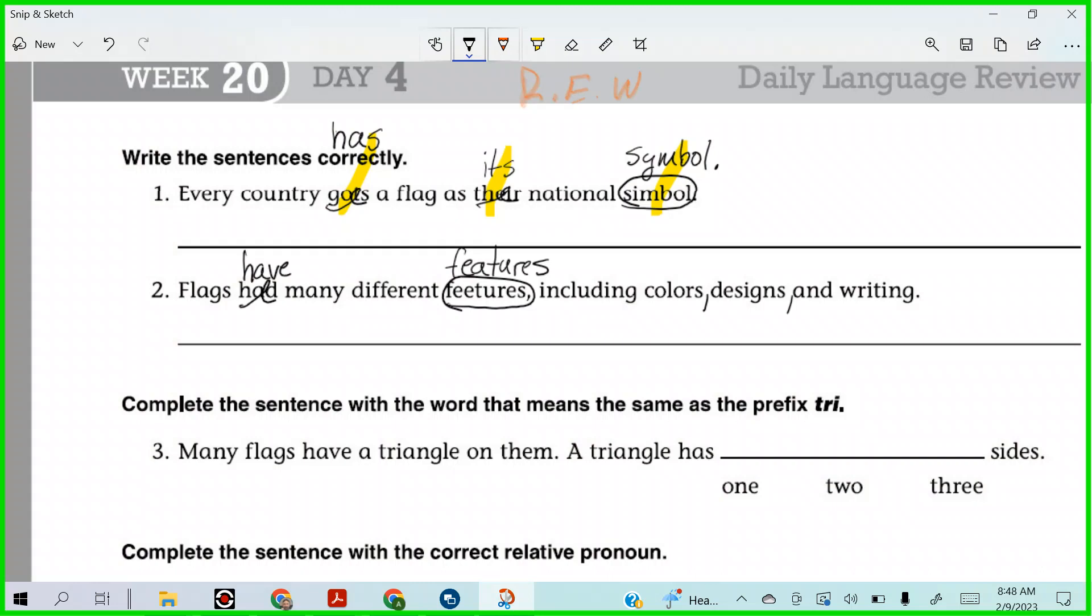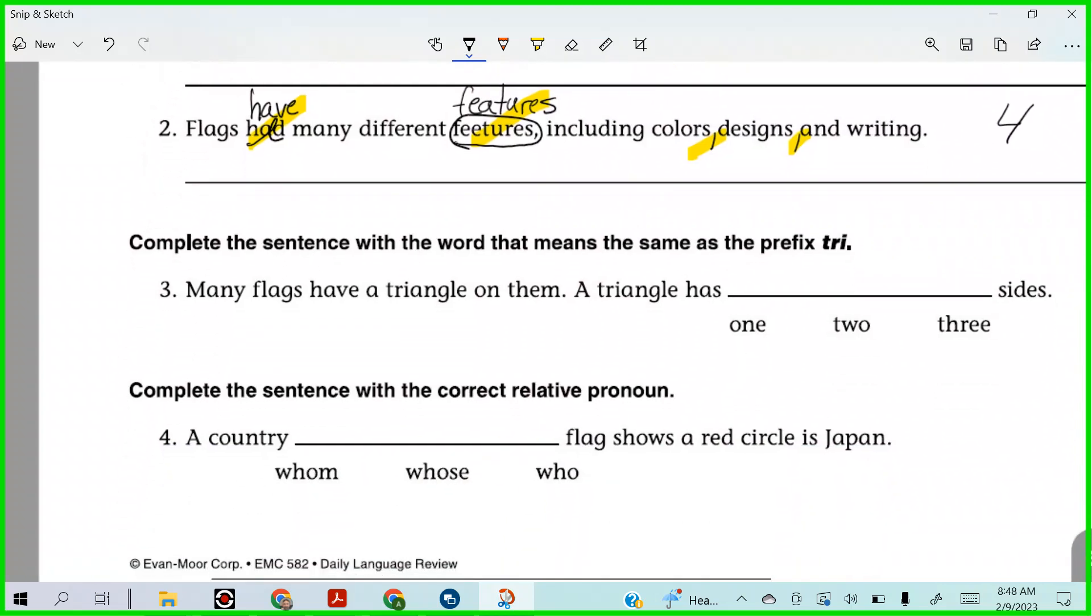So we've done a lot of reading. We've done some editing. How many corrections do we have? Flags have many different features, colors, including colors, designs, and writing. So for this one, we have one, two, three, four corrections. And for the first one, we had three corrections.